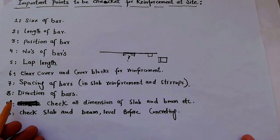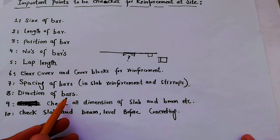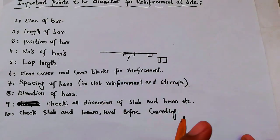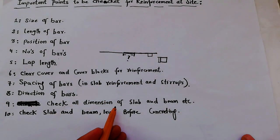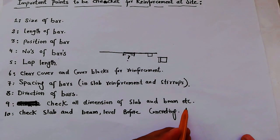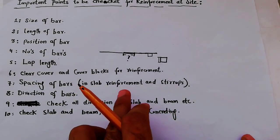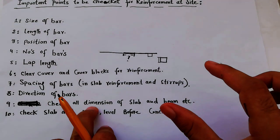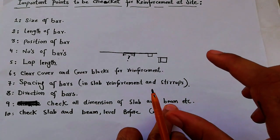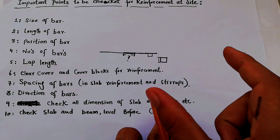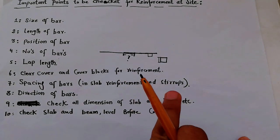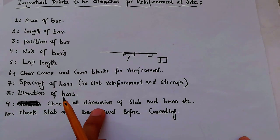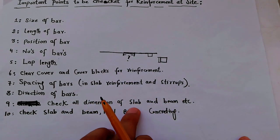Eighth, check the direction of bar — is the direction of bar correct in the slab or not? Ninth, check all the dimensions of the slab, beam, etc. With the drawing, you have to check the dimensions for the slab: its depth, its length, and its width. Also for the beam, check the depth, length, and width as per drawing. This point is very important — if the dimension is not okay, it can cause many problems.